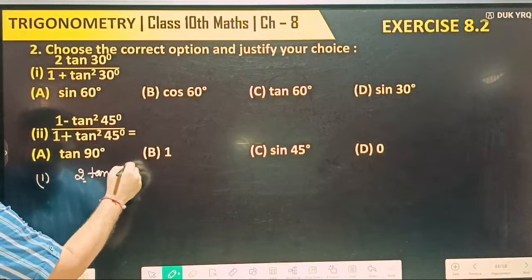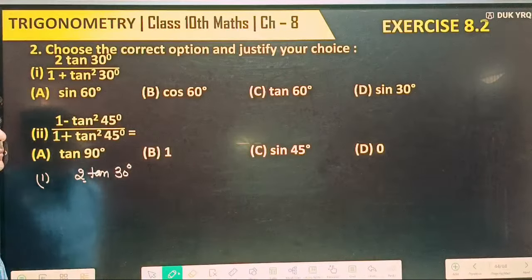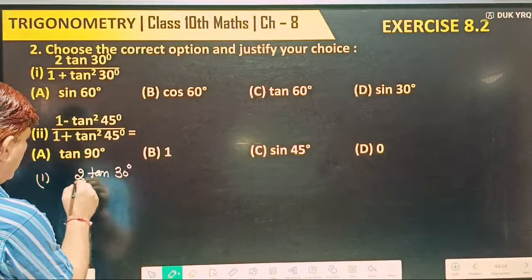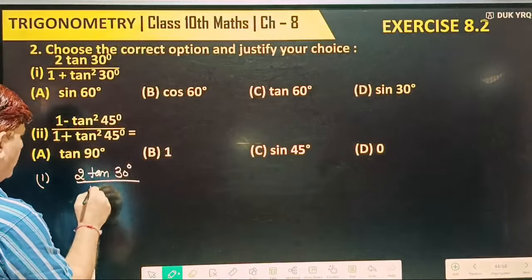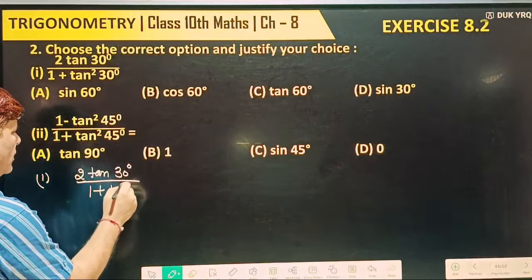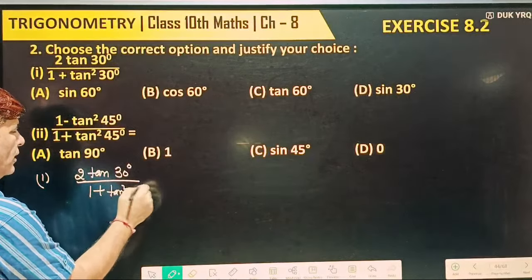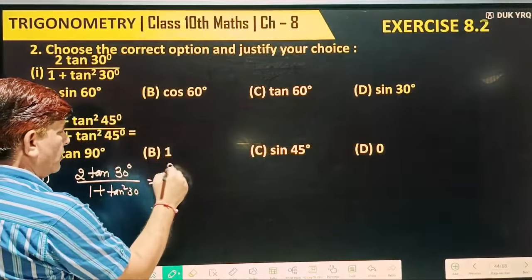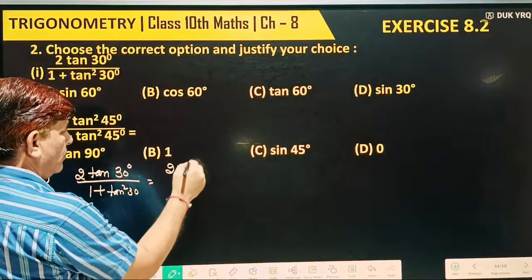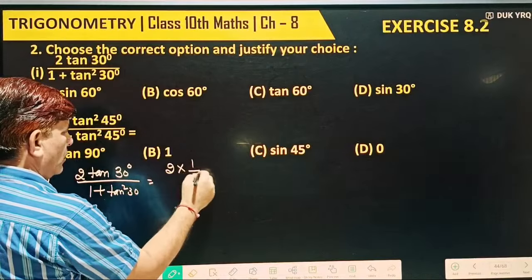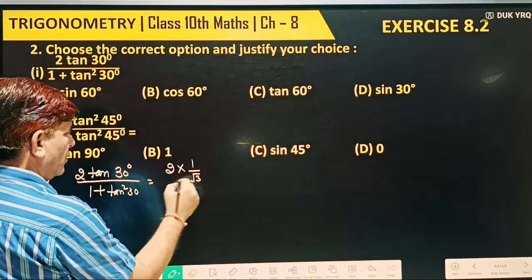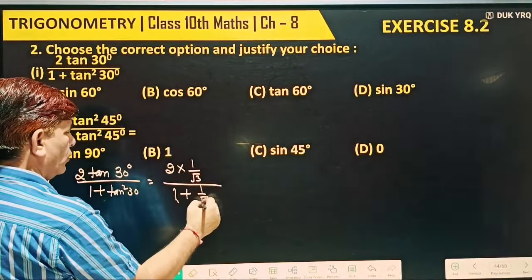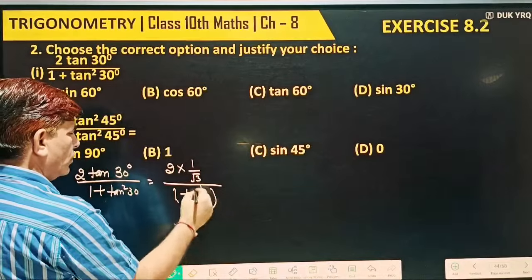30 degree. 2 tangent 30 degree by 1 plus tangent square 30 degree. Put value. What's the value of tangent 30? It's 1 by root 3. So we have 2 times (1 by root 3) divided by 1 plus (1 by root 3) whole square.